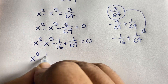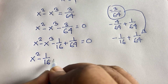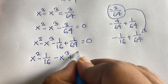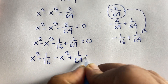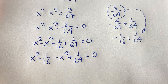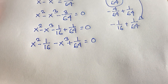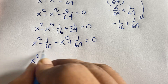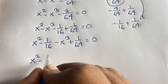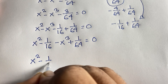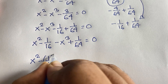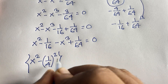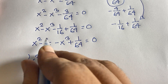Rearranging: minus x cubed plus 1 over 64 equals 0, and x squared minus 1 over 16 equals 0. I can see easily that 1 over 16 equals 1 over 4 squared, so x squared minus 1 over 16 is x squared minus (1 over 4) squared.